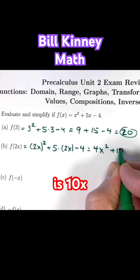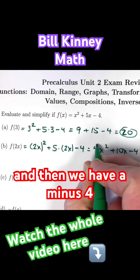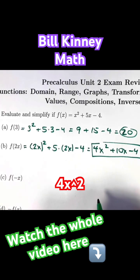5 times 2x is 10x, and then we have a minus 4. In part b, the answer simplifies to 4x squared plus 10x minus 4.